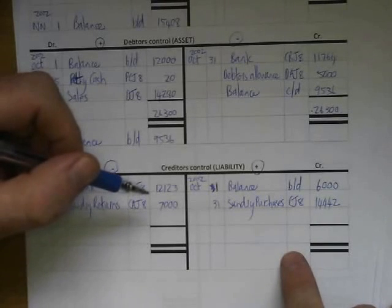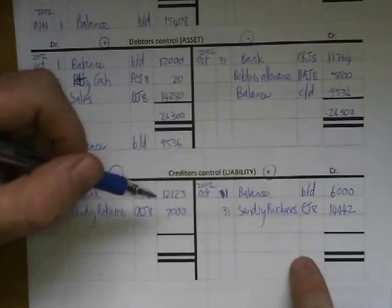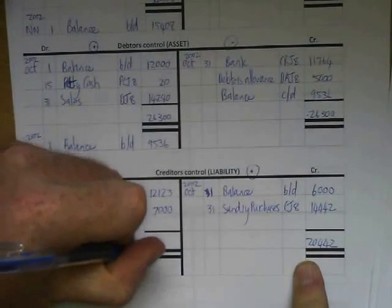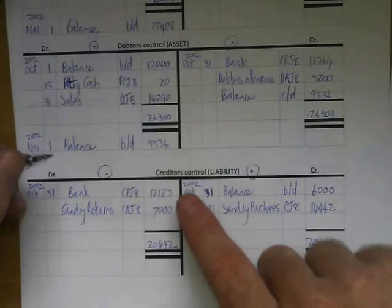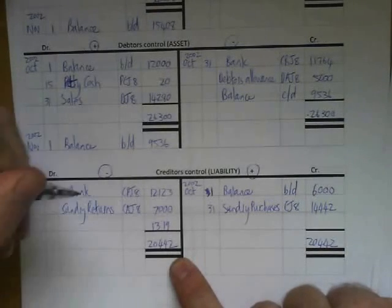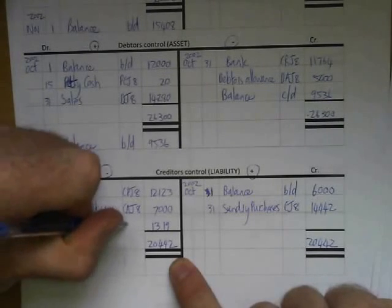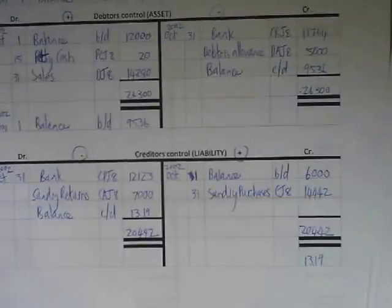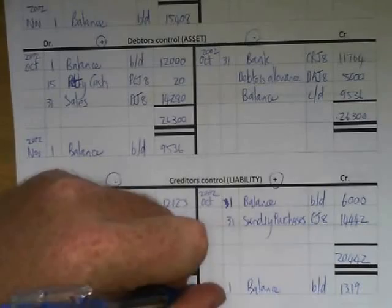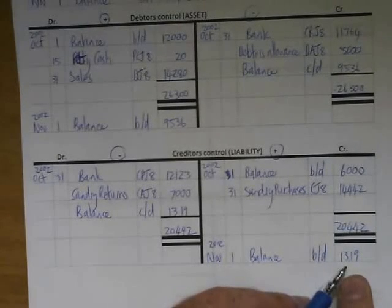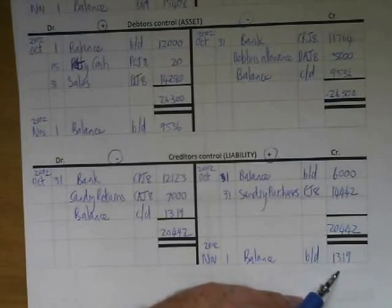Now we check which side is greater — the right-hand side is more. We write the balance carry down of R2,442 on the right side, then bring it down on the left. The closing balance works out to R1,319, brought down on the 1st of November 2002 — that is still what we owe people at the end of the month.